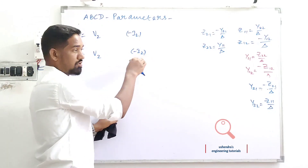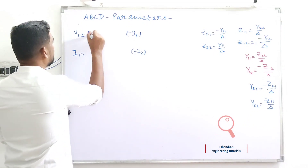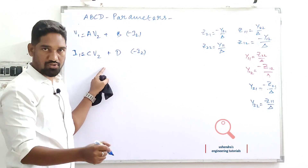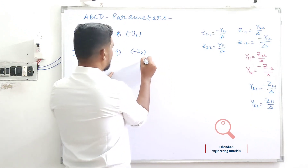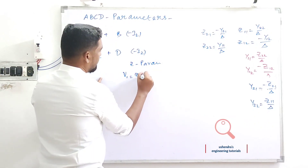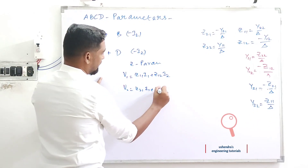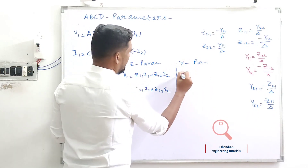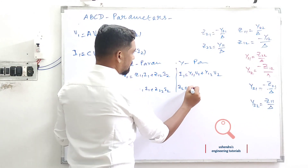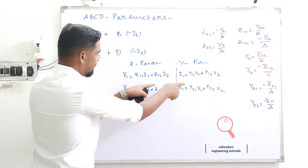I1 is in the same direction, but I2 is against the direction we consider from the beginning of the two-port network. So we have: V1 = A·V2 + B·(-I2), and I1 = C·V2 + D·(-I2). These are the two important governing equations for ABCD parameters, also known as transmission parameters. On the other hand, for Z parameters: V1 = Z11·I1 + Z12·I2, and V2 = Z21·I1 + Z22·I2. For Y parameters: I1 = Y11·V1 + Y12·V2.